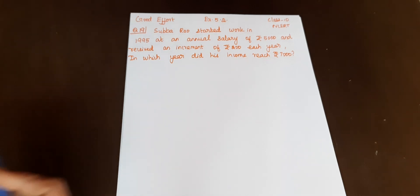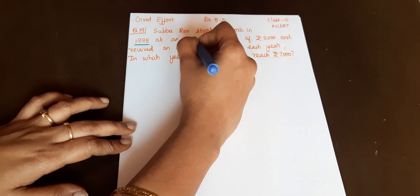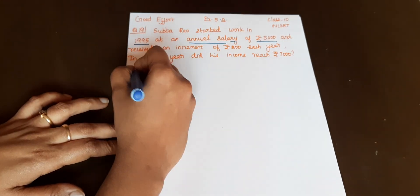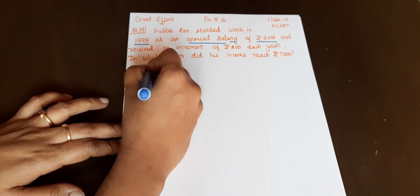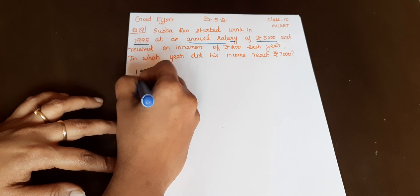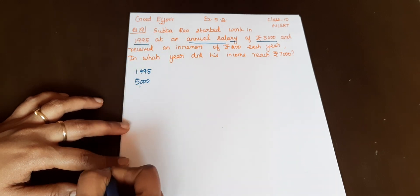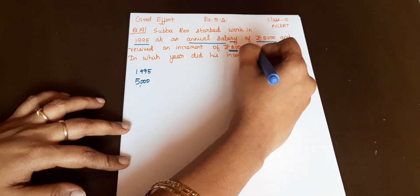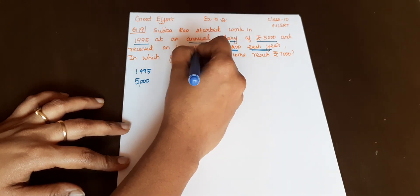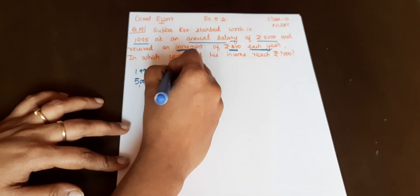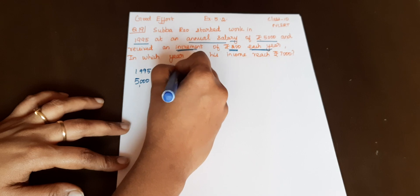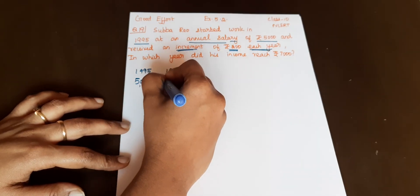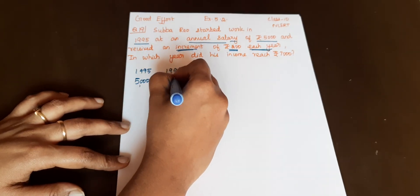So in 1995, Shubha Rao's annual salary was Rs. 5,000. Next year there is an increase of Rs. 200. So in 1996 there is an increase of Rs. 200. So next year the salary becomes Rs. 5,200.